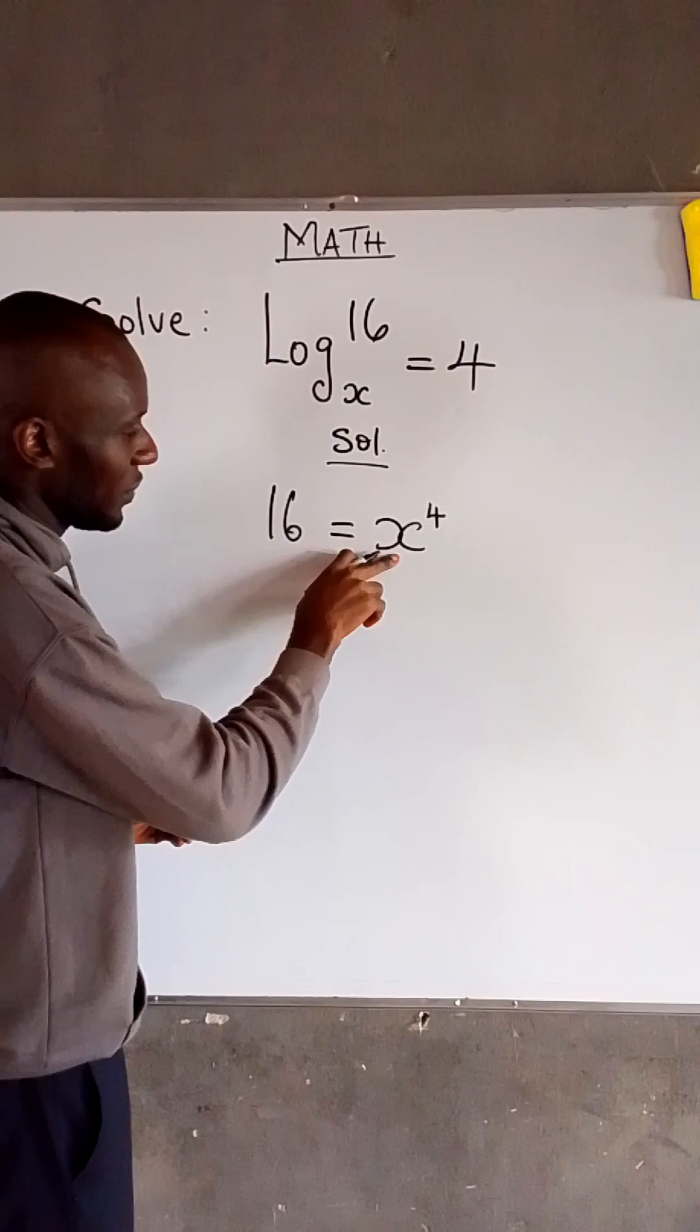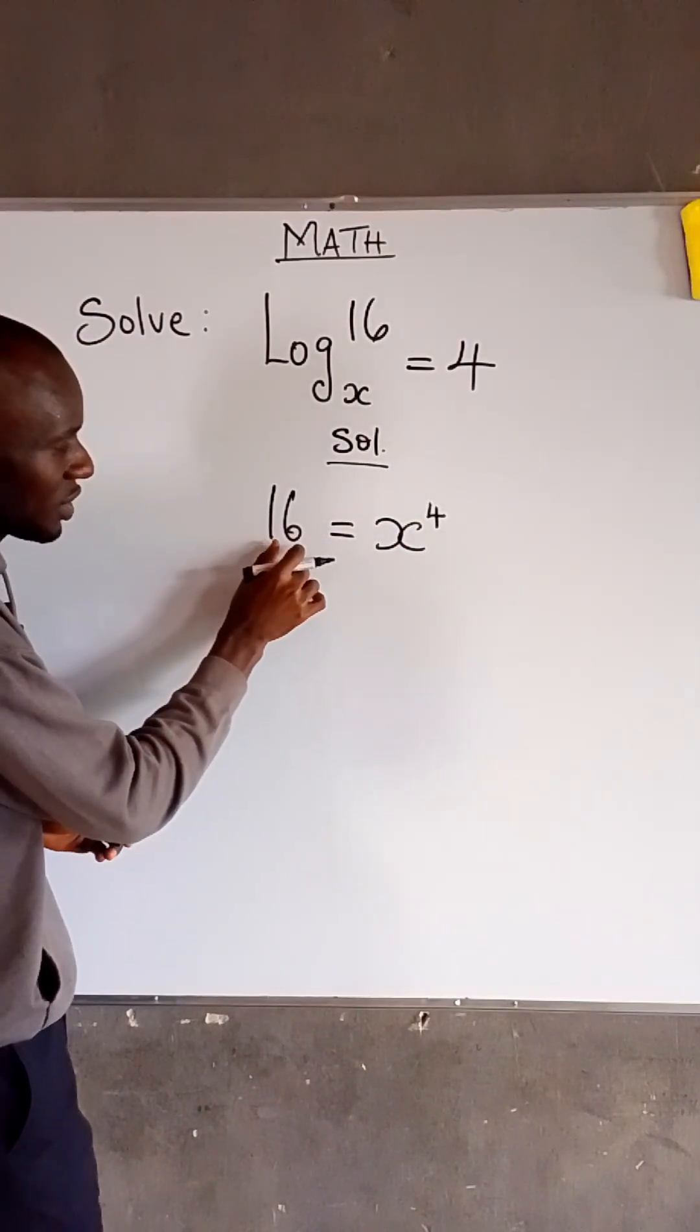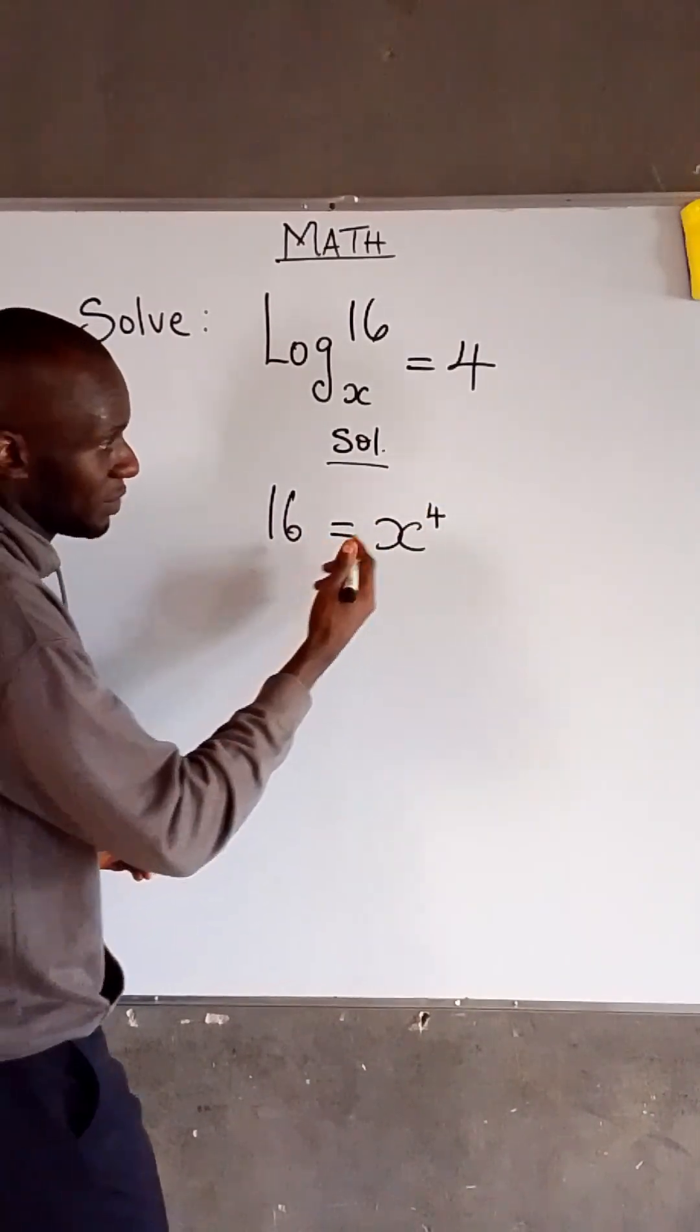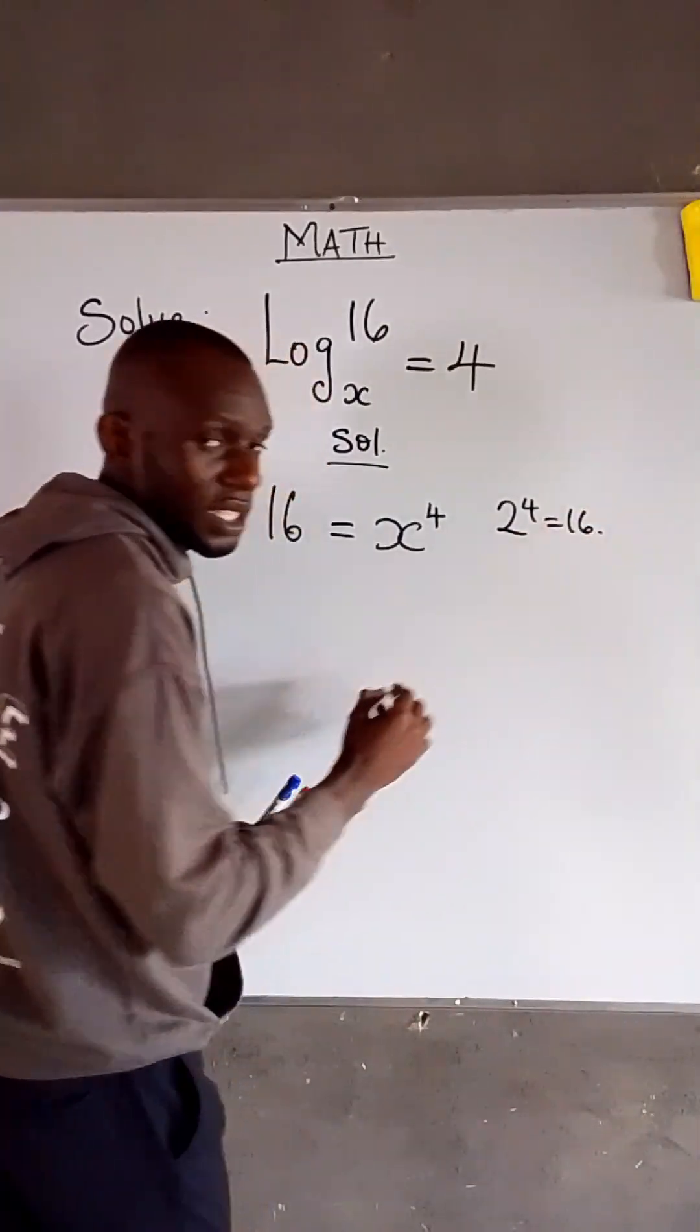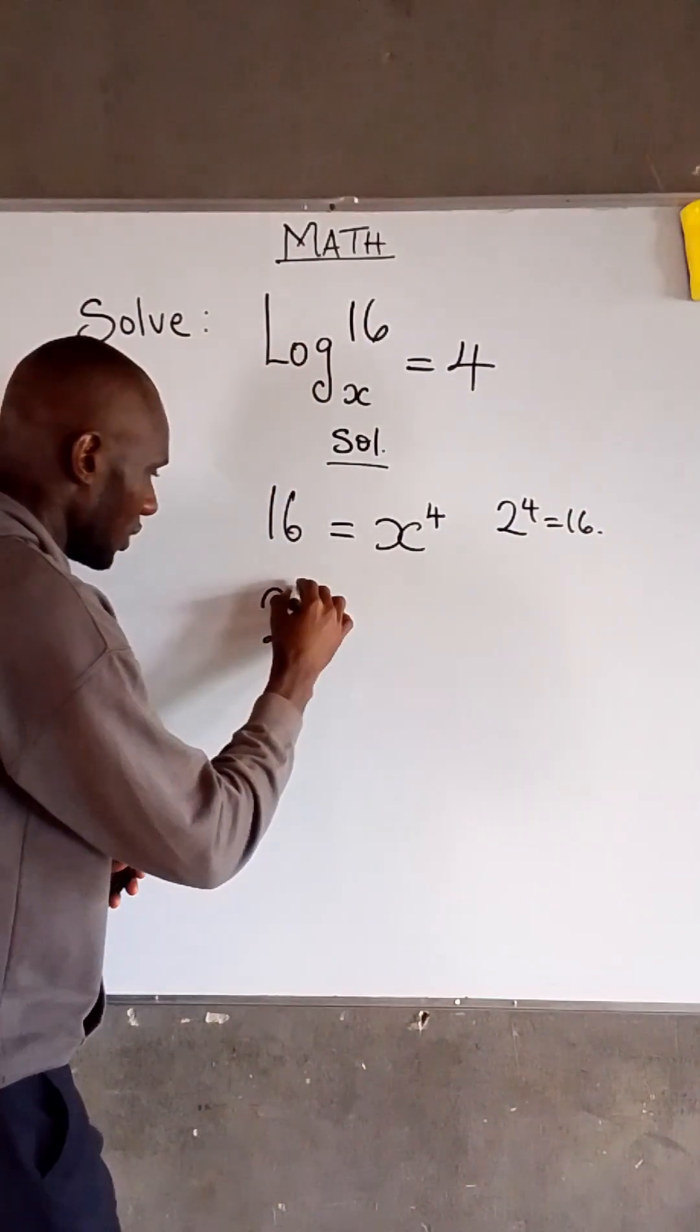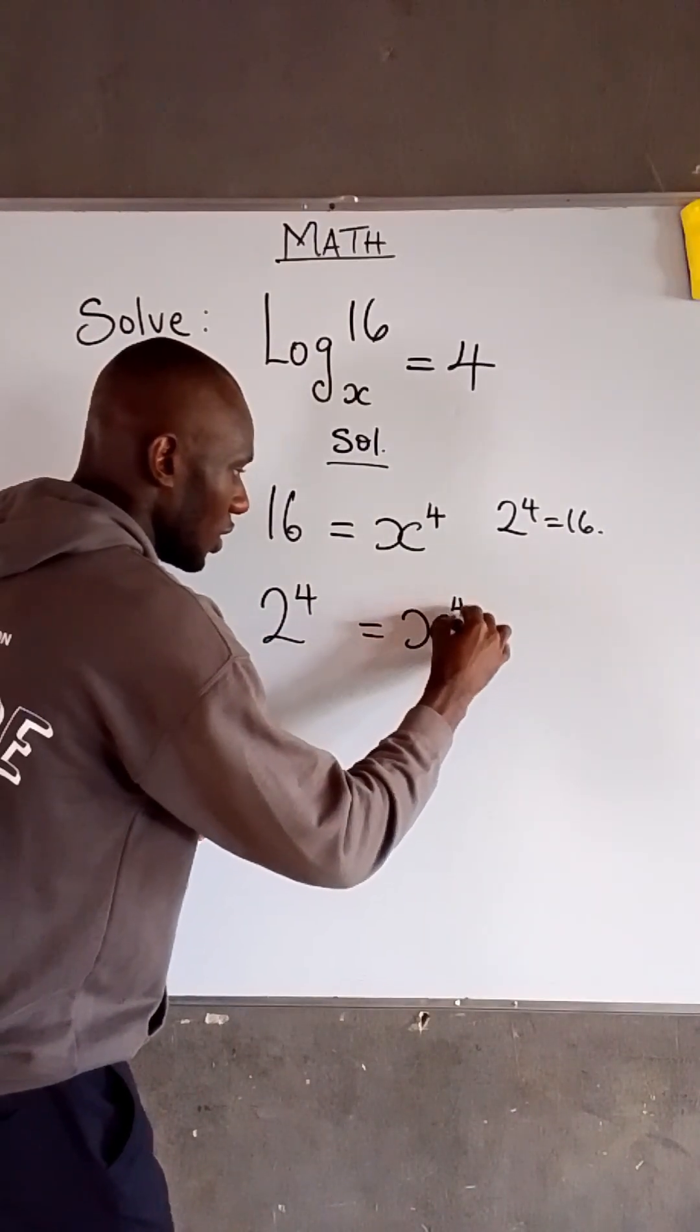Now, we have x to the power of 4. At this point, can we be able to express 16 to have a base that has the power of 4? Yes, because 2 to the power of 4 is equal to 16. Therefore, the left-hand side becomes 2 to the power of 4 is equal to x to the power of 4.